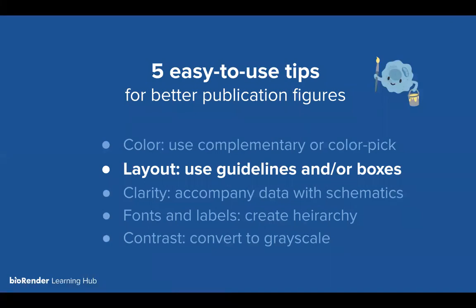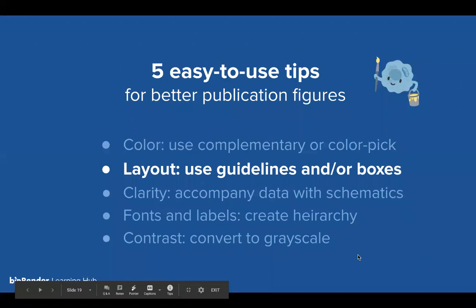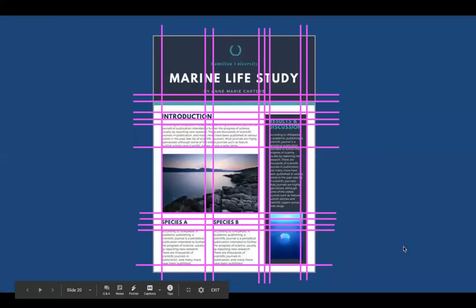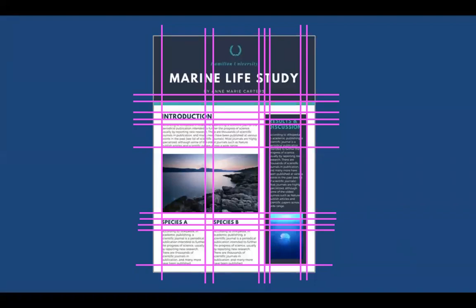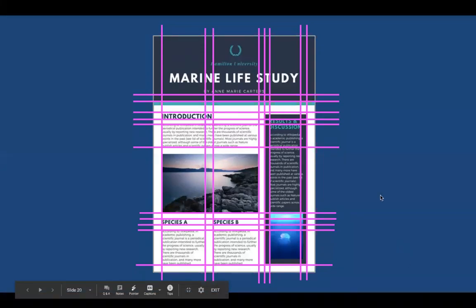That was a quick overview of complementary colors — I'll go more into depth in the live demo. Moving to tip two: layout. This is probably one of the key factors in making a multi-panel image look cohesive. We use guides and grids in the design industry, built into software like Adobe Illustrator and PowerPoint, to demarcate where margins and padding should be. Generally, pick one unit — an inch or centimeter — and follow it around the entire figure.